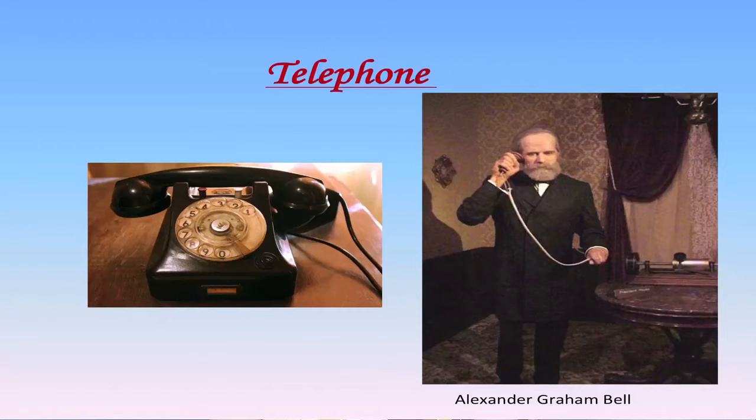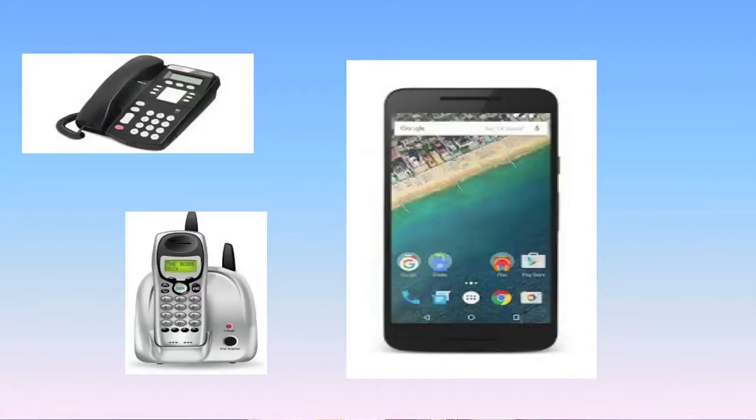Another medium of communication is the telephone. The invention of the telephone is credited to Alexander Graham Bell. Telephones are of several types: handsets, mobile phones, satellite phones, and through internet. The basic function of a phone is to allow two-way communication of voice. Phones with the facility of transmitting images have also become available. A wired phone has a microphone and a speaker. The microphone receives our voice and converts it into an electrical signal.